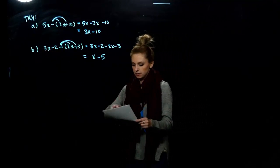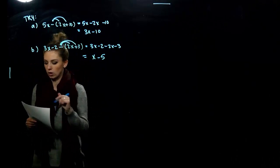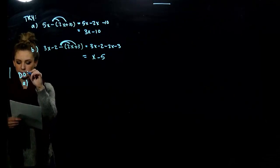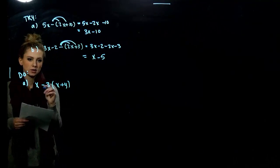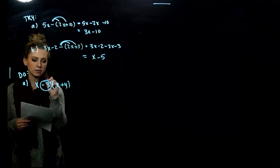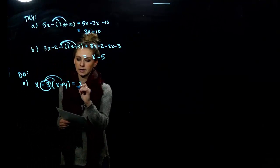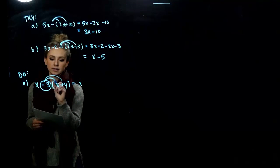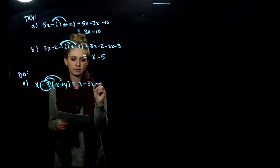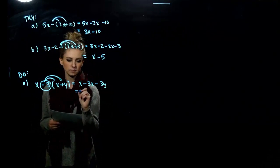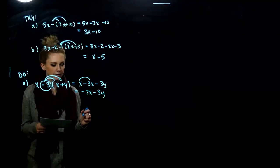The last part of this section: multiplying by numbers other than plus or minus 1. In this next example, I have negative 3 times this quantity. We have to send both the negative and the 3 into each term to get rid of the parentheses. So x on the front doesn't change, but negative 3 times x gives minus 3x, and negative 3 times y gives minus 3y. Combining like terms: negative 2 factors of x and negative 3 factors of y.